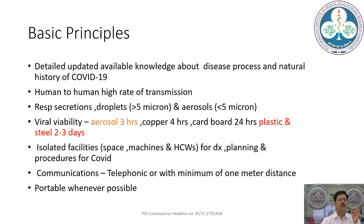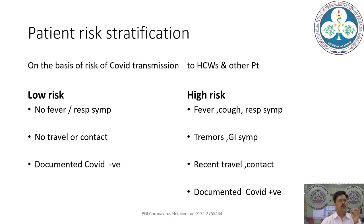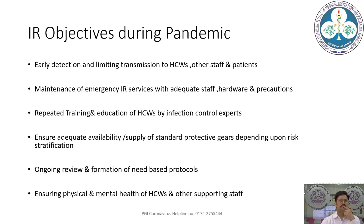Patient risk stratification in the COVID era means assessing risk of COVID transmission to healthcare workers and other patients. Low-risk patients: no fever, no respiratory symptoms, no definitive travel or contact history, and documented COVID negative. High-risk patients: all others — those with fever, cough, respiratory symptoms, neurological or GI symptoms, sudden neurological events, recent travel or contact history, or documented COVID positive for other reasons.